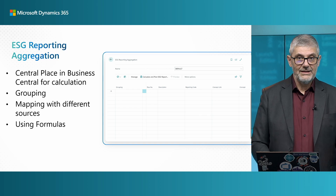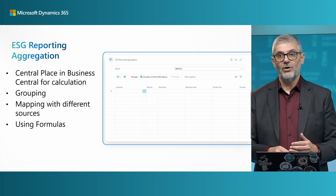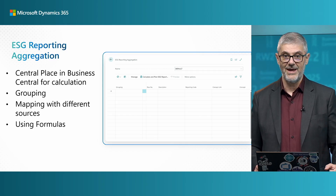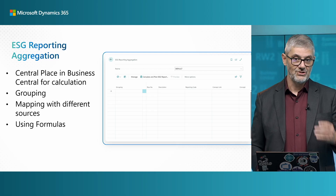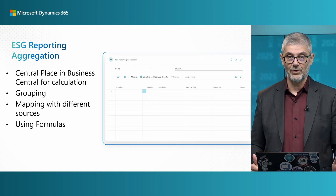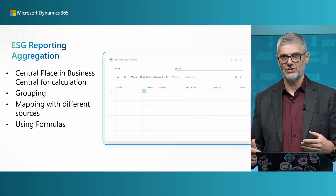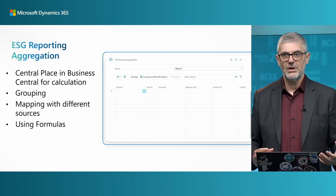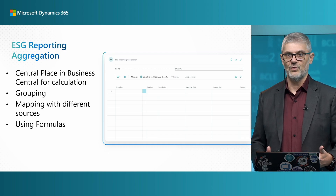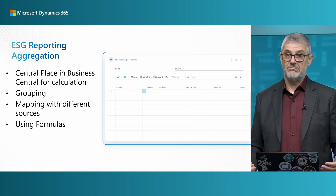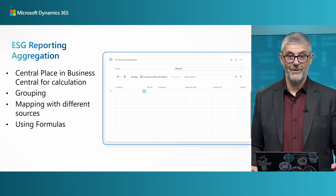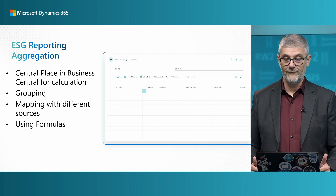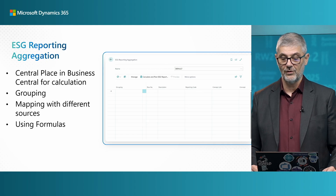On the other side, we need a place where we will calculate all information we have in Business Central. So now we have the ESG reporting aggregation page — this is actually not just a page, this is a whole tool for calculating. This is the central place in Business Central for all these calculations. And I want to emphasize: we are using this for ESG reporting, but you can use this for any table. You can connect to any tables and use it for making additional reports as well. You can group, map with different data sources, and use formulas — this is a combination of a few different tools in Business Central.